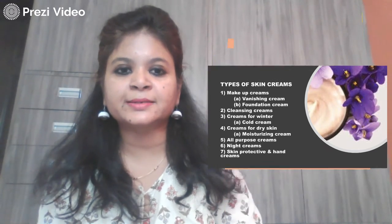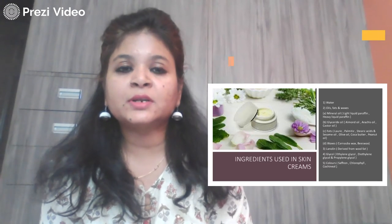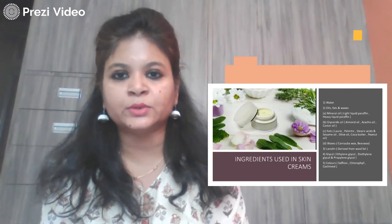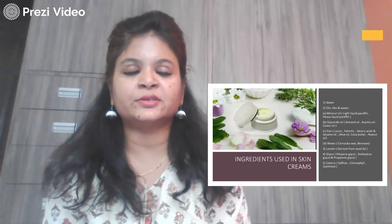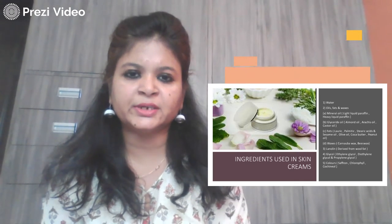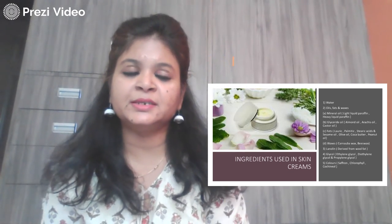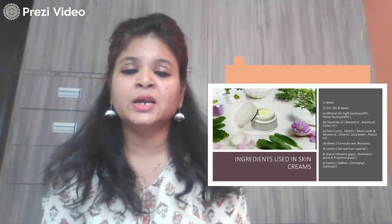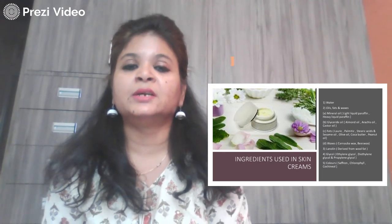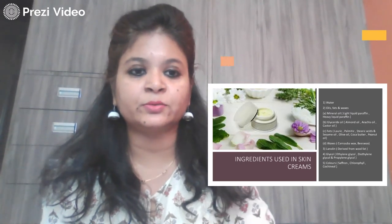Now let us understand the different formulation components — what creams are made up of and the actual chemical constituents used generally in the formulation of these different kinds of cream. It depends on the manufacturer, but when we talk about the general formulation of creams, these are the specific ingredients widely used in moisturizing creams, vanishing creams, dry skin creams, all-purpose creams, and hand creams.